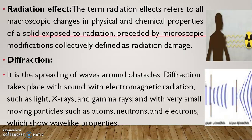The next term is diffraction. It is the spreading of waves around obstacles. It takes place with sound, with electromagnetic radiation such as light, X-rays, and gamma rays, and even with very small moving particles such as atoms, neutrons, and electrons, which show wave-like properties. These objects can go around an obstacle and spread. That is the spreading of waves around obstacles.